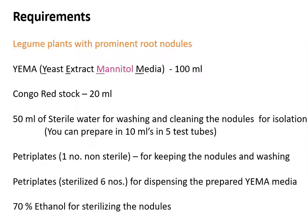Now we look at the requirements needed to isolate Rhizobium. You need to collect legume plants with prominent root nodules. The media used for this isolation is Yeast Extract Mannitol Agar (YEMA), to which Congo Red is added. Media composition details are available in the lecture notes. You also need to prepare 50 ml of sterile water, required mainly to wash and clean the collected nodules before isolation.